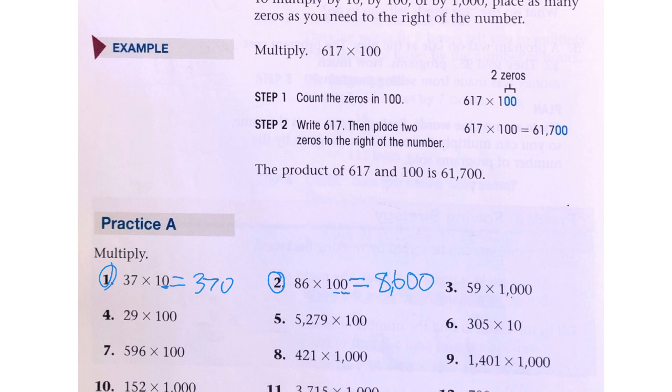59 times 1000. 1000 has three zeros, so we'll write 59 and three zeros.